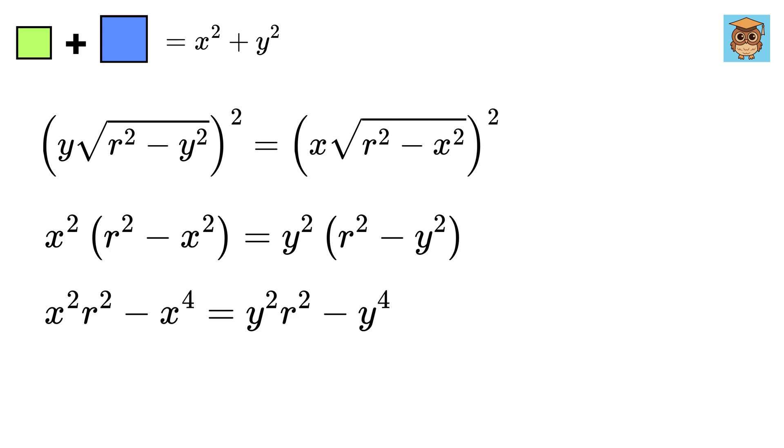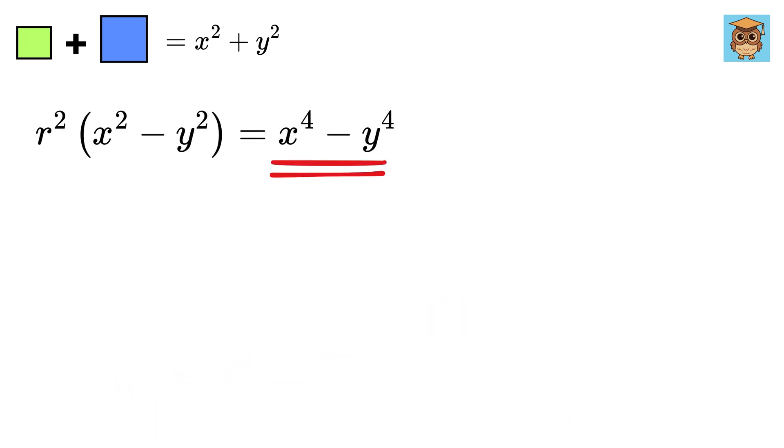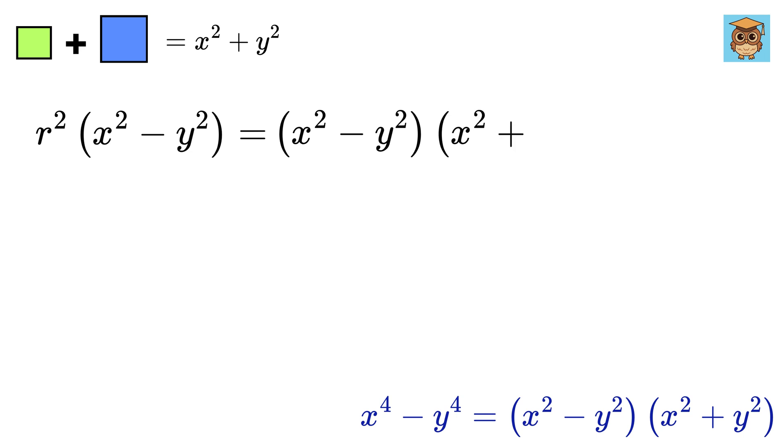Expand it once again. Then collect the like terms and rearrange it to get this. Now this x to the fourth power minus y to the fourth power equals (x squared minus y squared) times (x squared plus y squared).